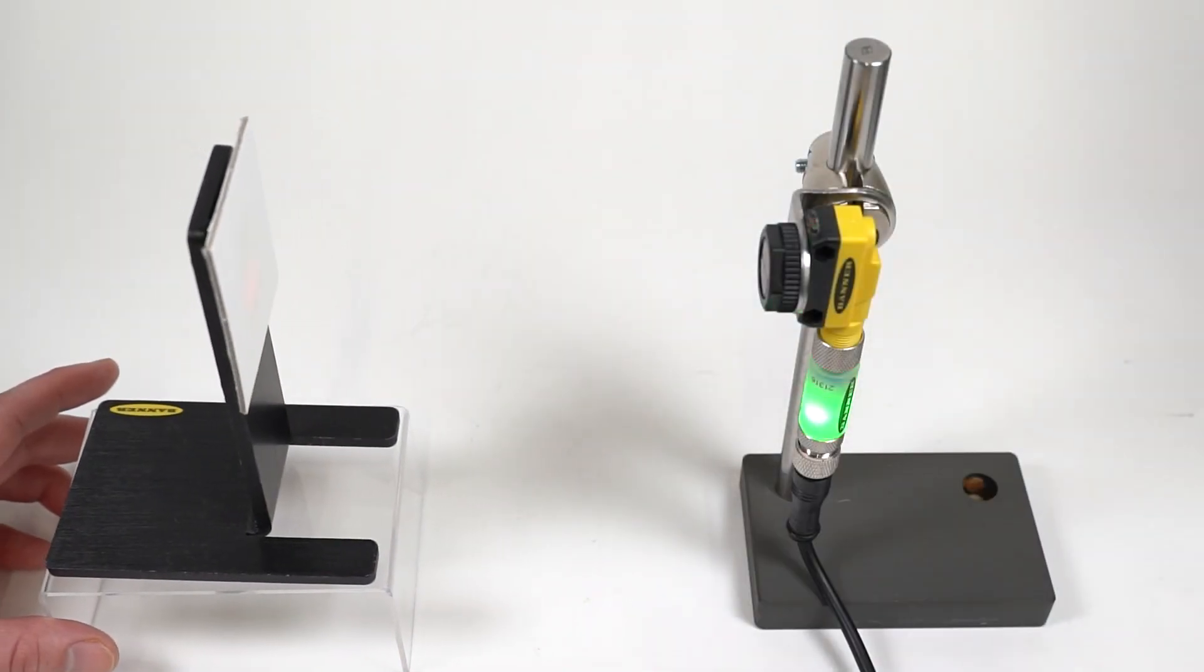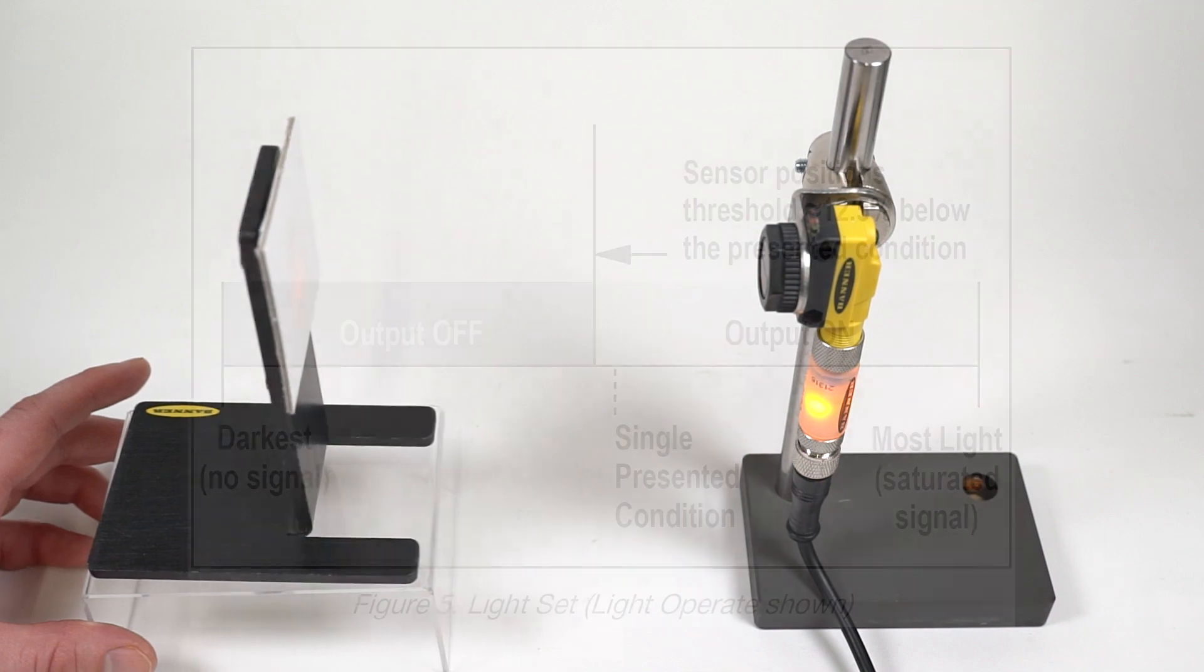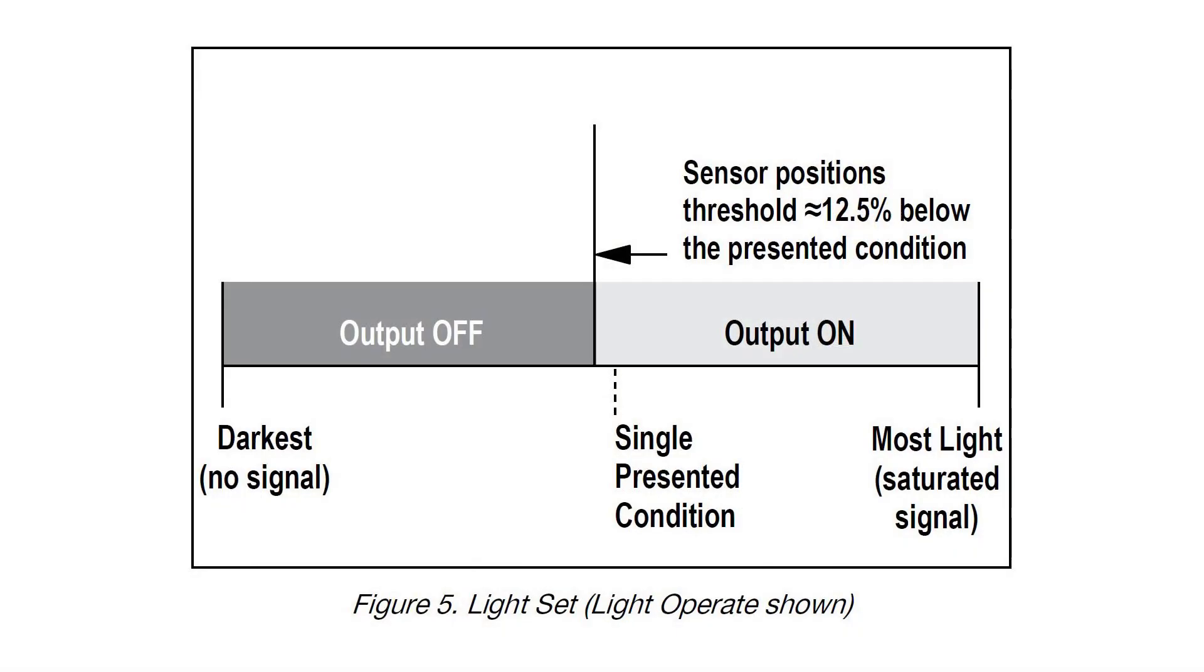The light set mode measures the light returning to the receiver and sets the switching threshold 12.5% below the taught condition.